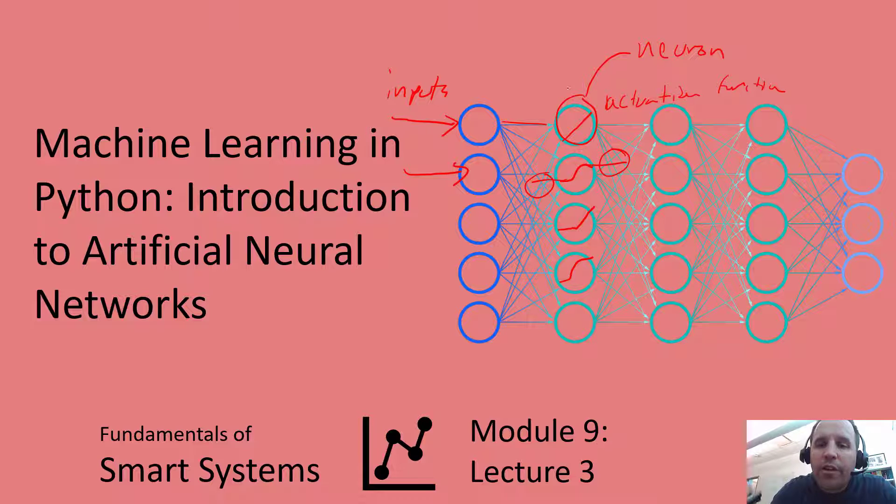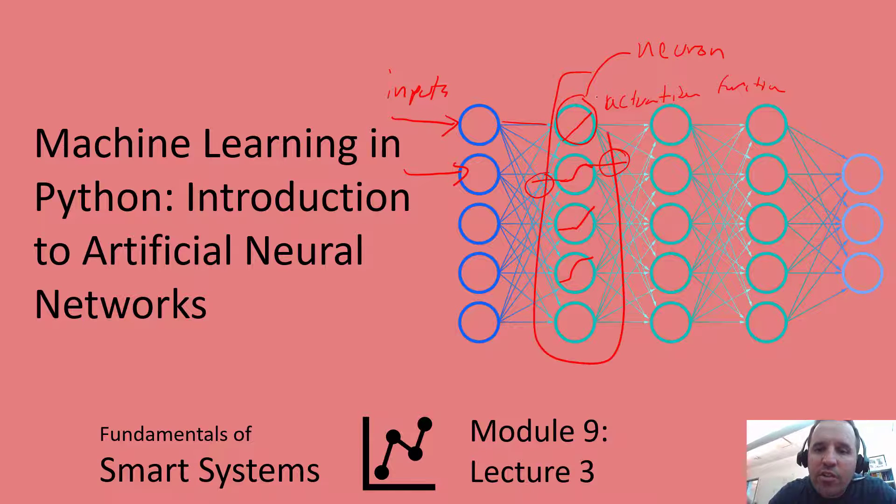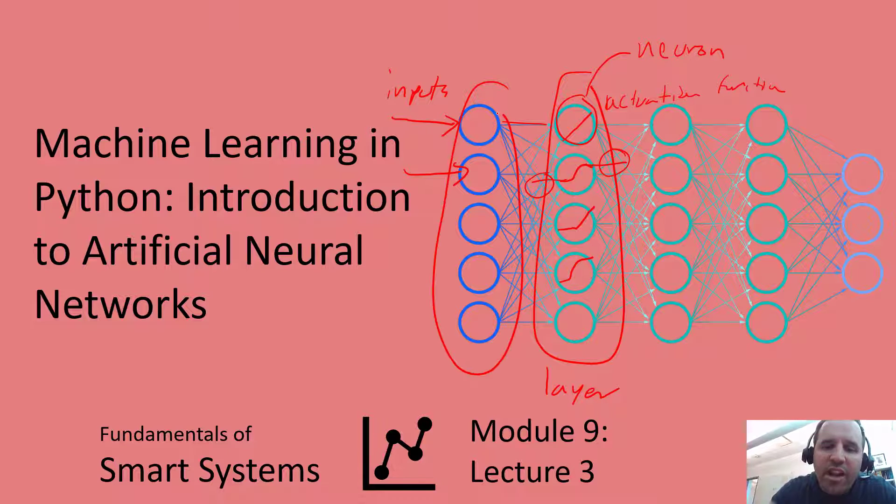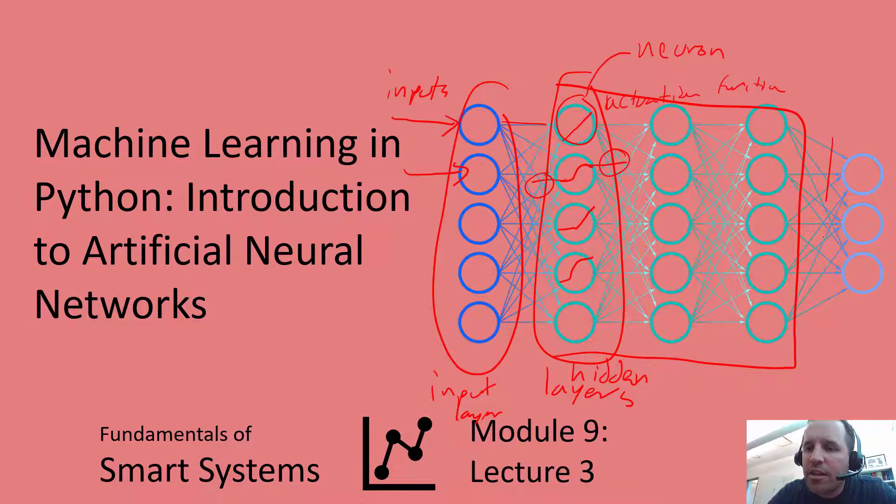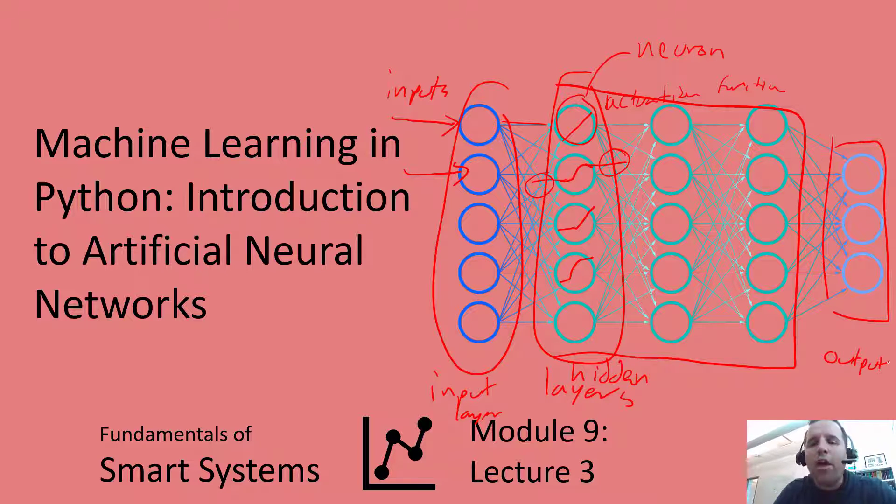These are called the neurons. Each individual dot, each set of neurons is called a layer. So here we have the input layer. In the middle we have hidden layers, and that would count all of these, and then at the end we have the output layer. Hopefully this will start to make sense to you very soon. I'm going to show you some of the actual math that happens in a neural network.